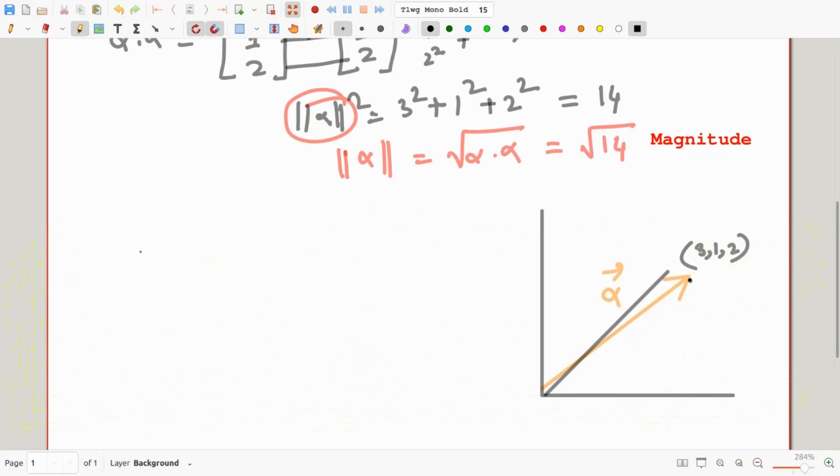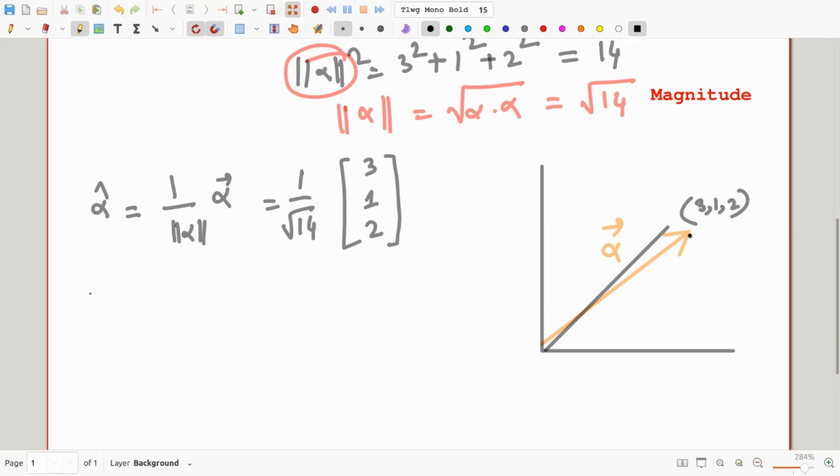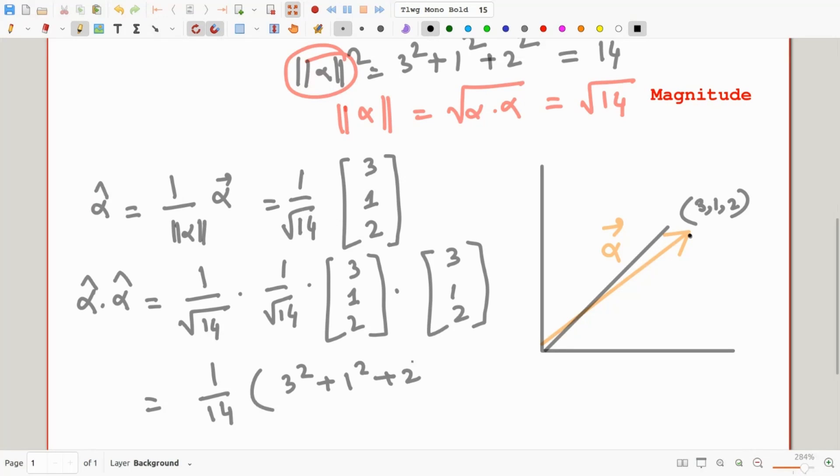I want to introduce you a second vector called alpha hat equals 1 by magnitude of alpha times alpha, which is nothing but 1 by square root of 14 times 3, 1, 2. We will observe an interesting fact here. We are going to perform the dot product of alpha hat with itself. Alpha hat dotted with alpha hat, that gives 1 by square root of 14 times 1 by square root of 14. 3, 1, 2 dot 3, 1, 2, this equals 1 by 14 and this is 3 square plus 1 square plus 2 square. Computing together gives us 1.